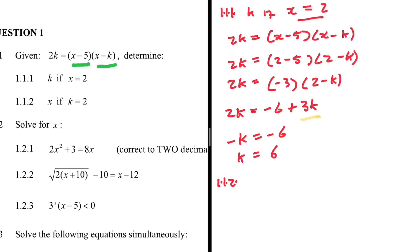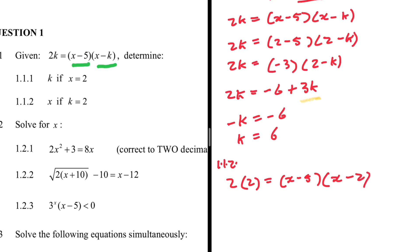For 1.1.2, we determine x if k = 2. The equation is the same but now we are given k and must find x. So in place of k we substitute 2: 2 × 2 = (x - 5)(x - 2), giving us 4 = (x - 5)(x - 2).